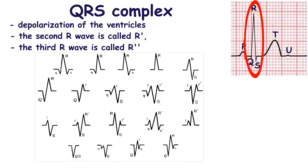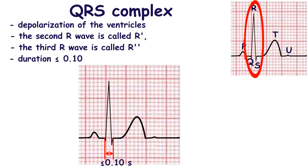There are different variations in morphology of the QRS complex. It may be called RS, R, QRS, QR, QS, RSR', RR', or S'. The normal width of the QRS complex should not exceed 0.10 seconds.